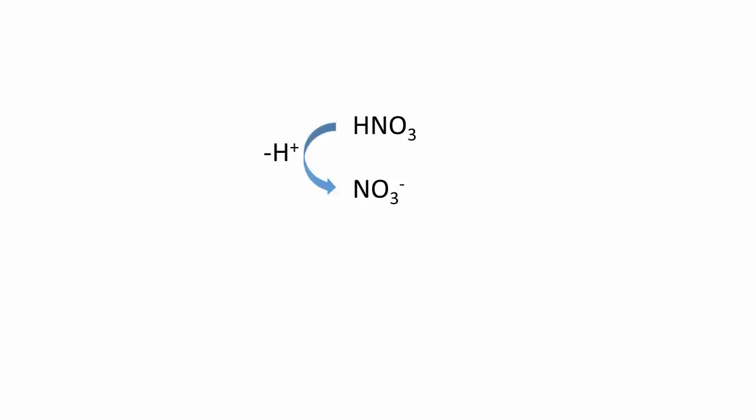A Brønsted acid is a proton donor, while a Brønsted base is a proton acceptor. Every Brønsted acid has its conjugate base, the molecule produced when a proton is removed. Every Brønsted base has its conjugate acid, the molecule produced when a proton is added.